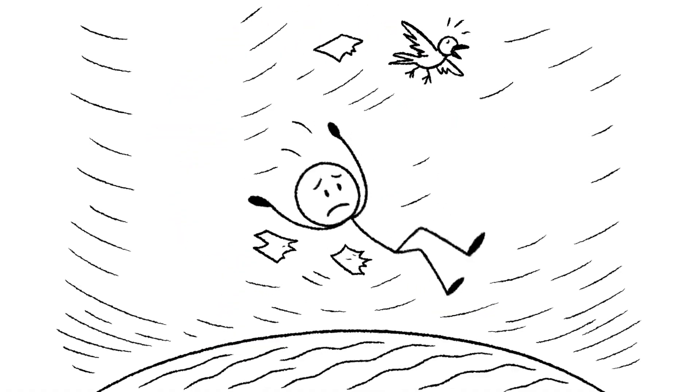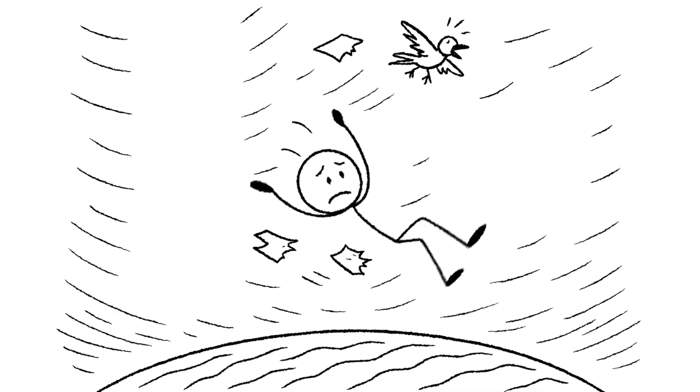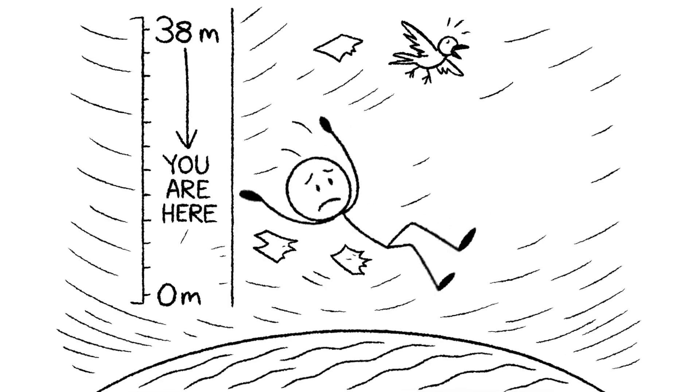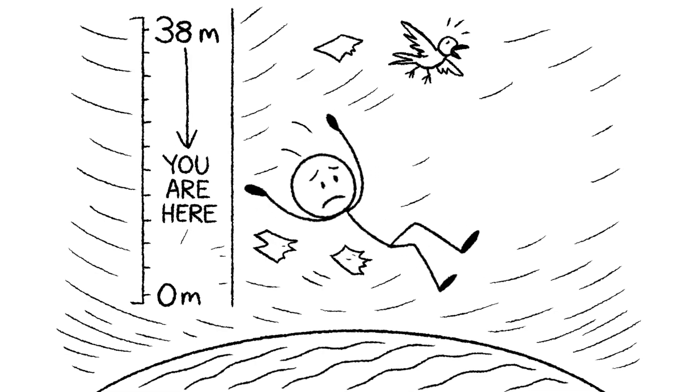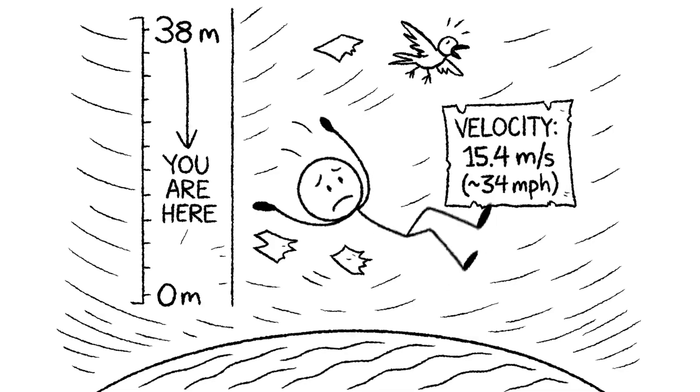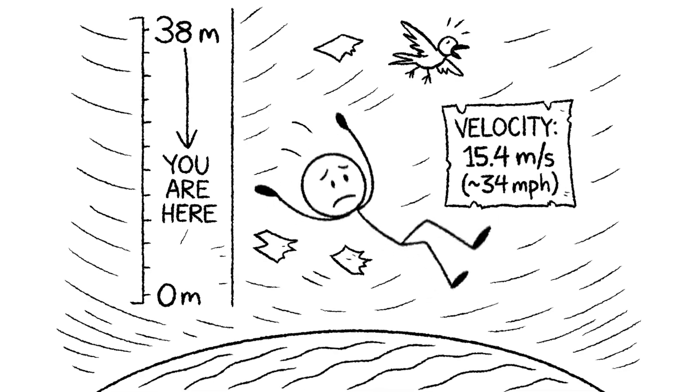T plus five seconds. The clock stops here. What's the final verdict? In these five seconds, the gravity has dragged you down over 38 meters into the depths of the atmosphere. You are now traveling at a speed of 15.4 meters per second, or about 34 miles per hour.